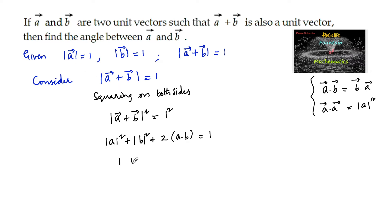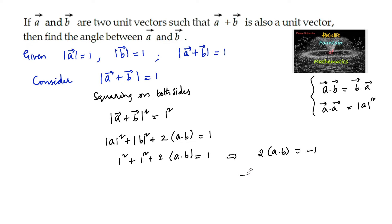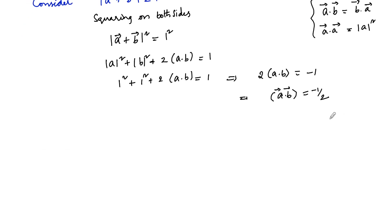Since mod a is equal to 1, we have 1 squared plus 1 squared plus 2 times of a dot b is equal to 1, so 2 times of a dot b is equal to minus 1, giving us a dot b equal to minus 1 by 2.